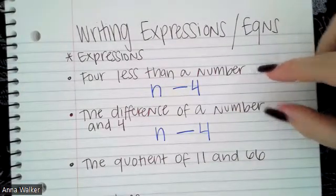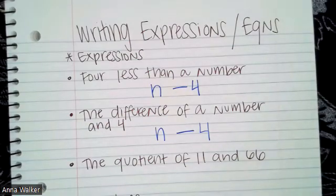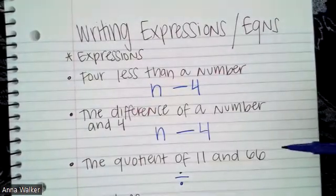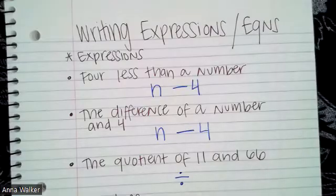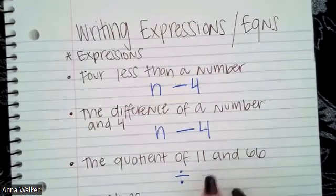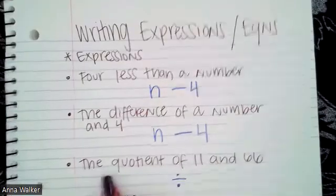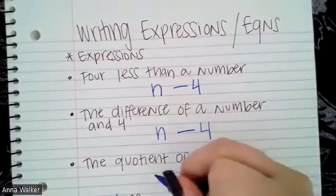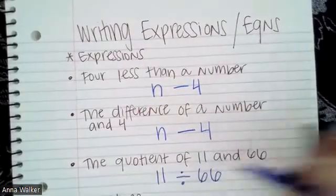And then let's talk about the last example. So this says the quotient of 11 and 66. Well, quotient is what we use to talk about division and just kind of like before they don't really give us an indication of what order needs to go, what number needs to go first, what needs to go second. So we are going to follow the order that they write it in.